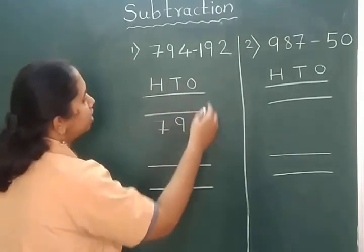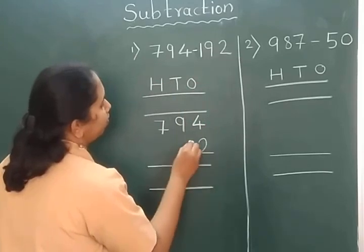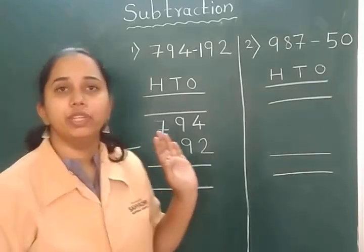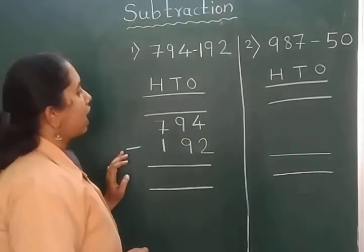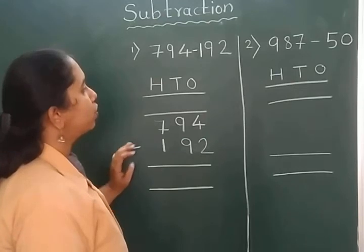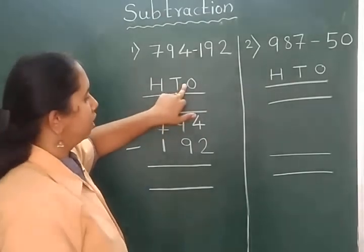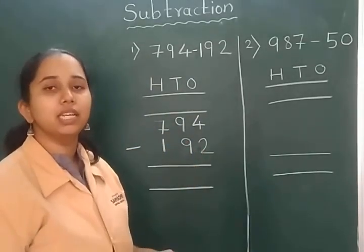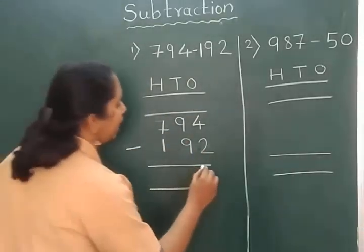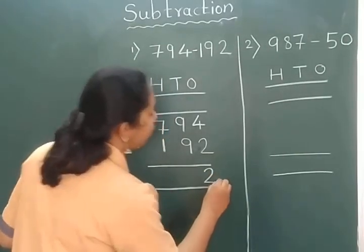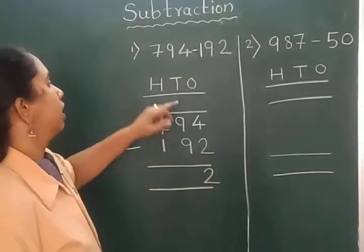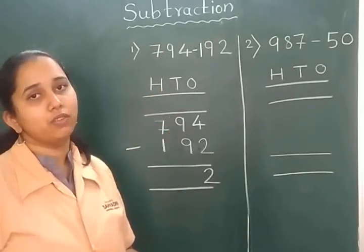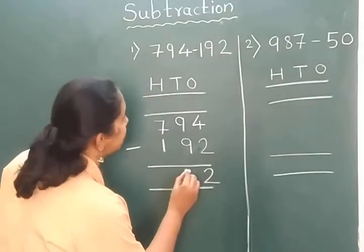In the same way I will write this number as well. We have to do subtraction over here, so we will start subtracting the numbers from one's place itself. So 4 minus 2 becomes 2. Now we will focus on ten's place. 9 minus 9 becomes 0. When we subtract the same number from the same number, answer comes 0.